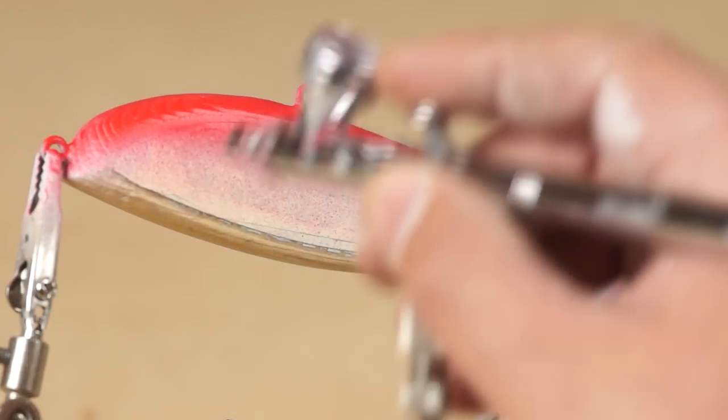For the back of the lure I'm filling up with black and rather than clean out the brush I'm just spraying through the red.